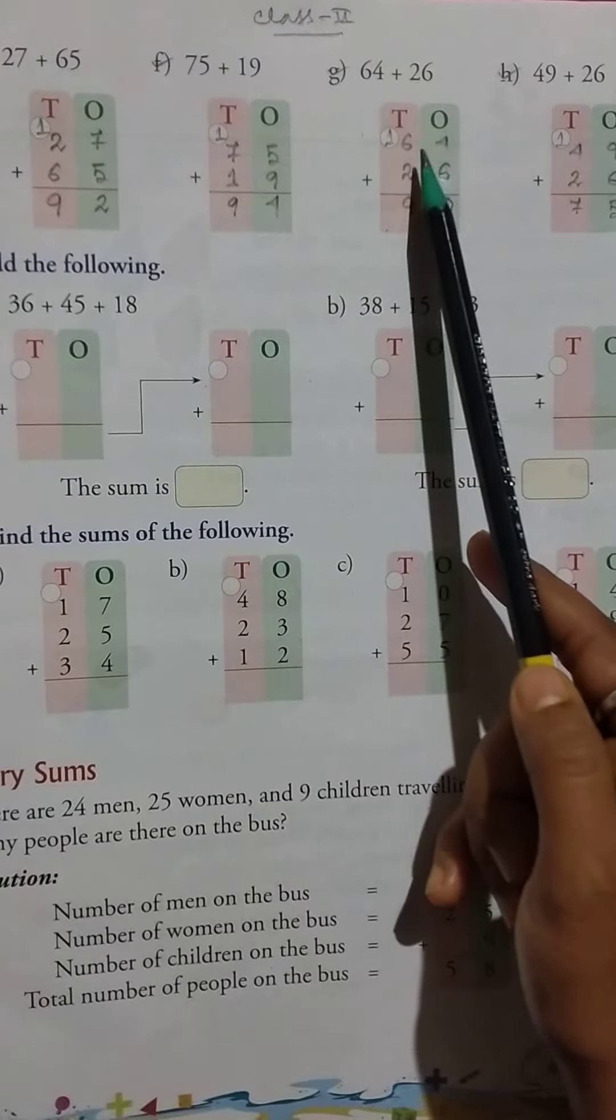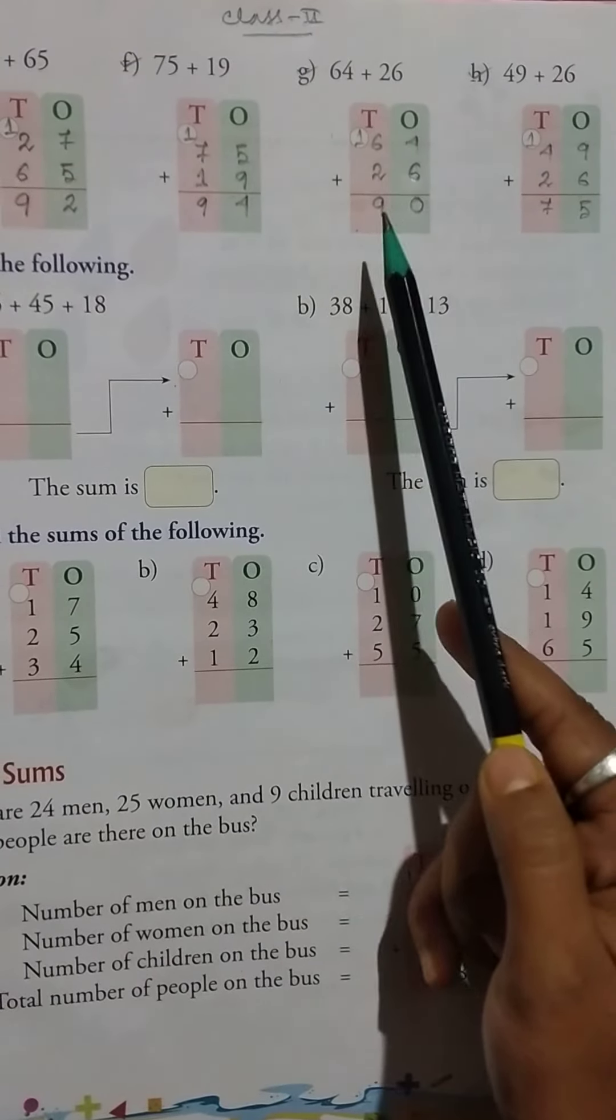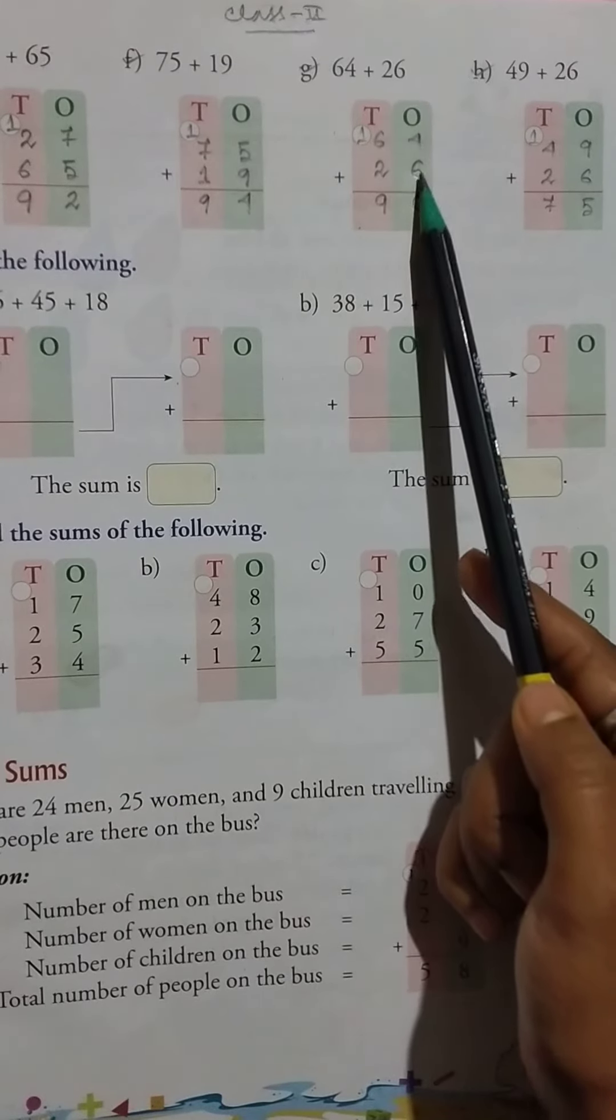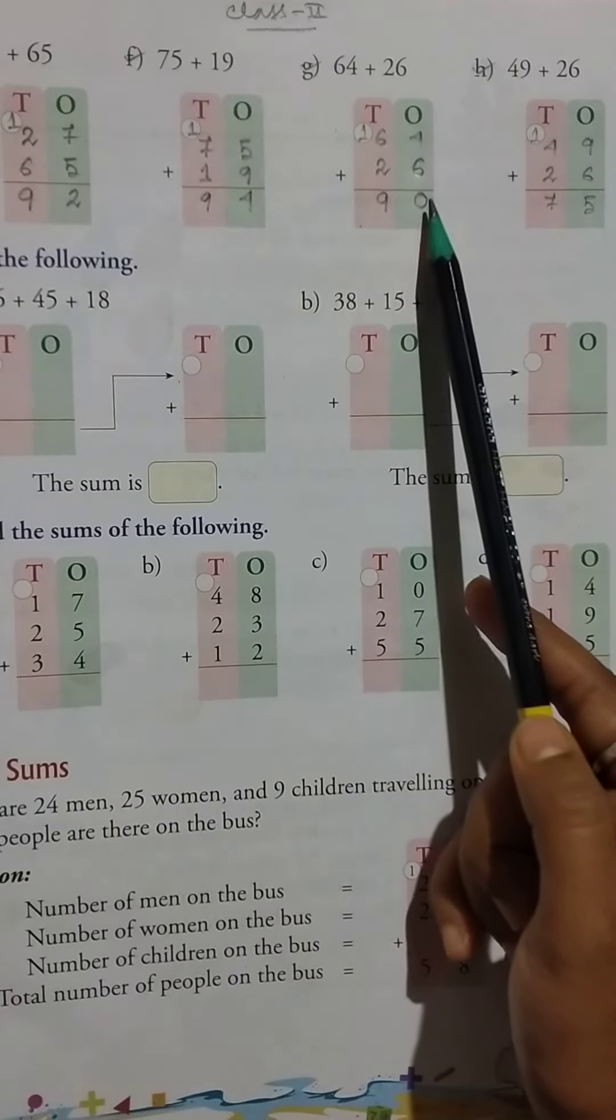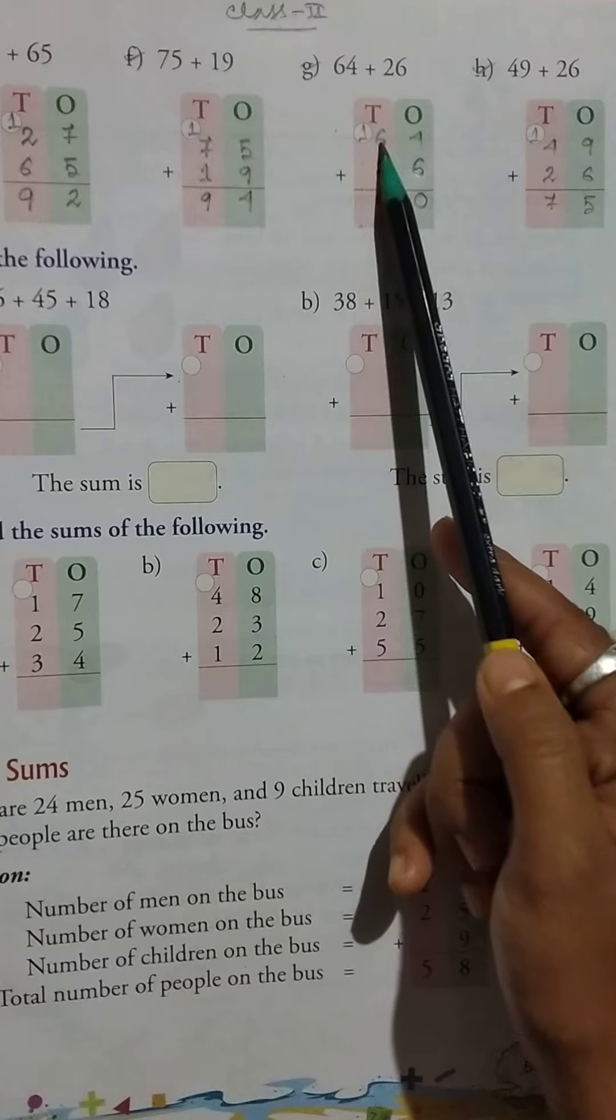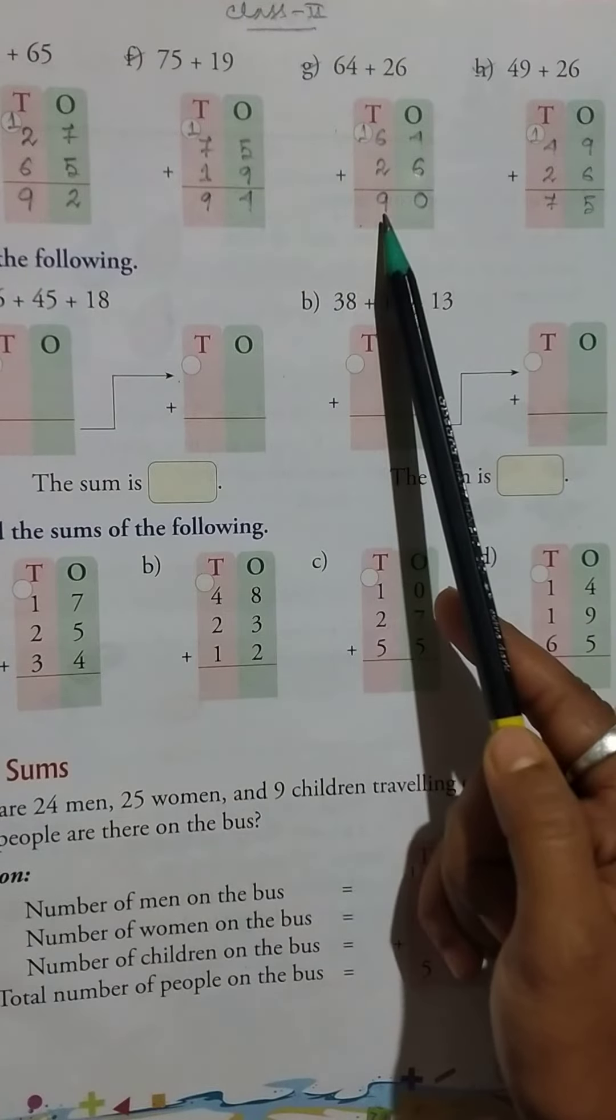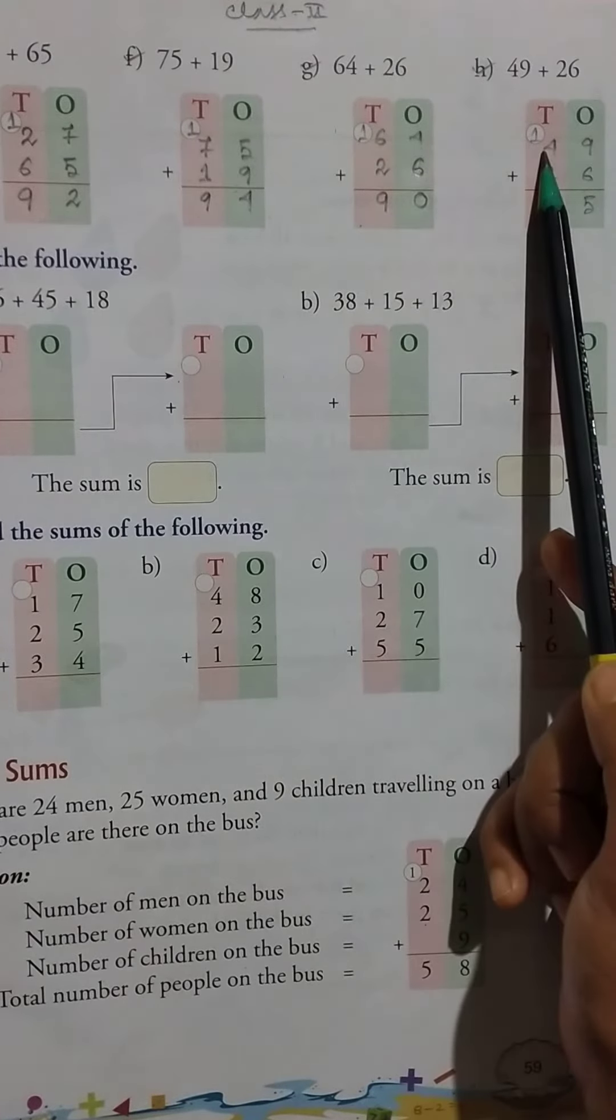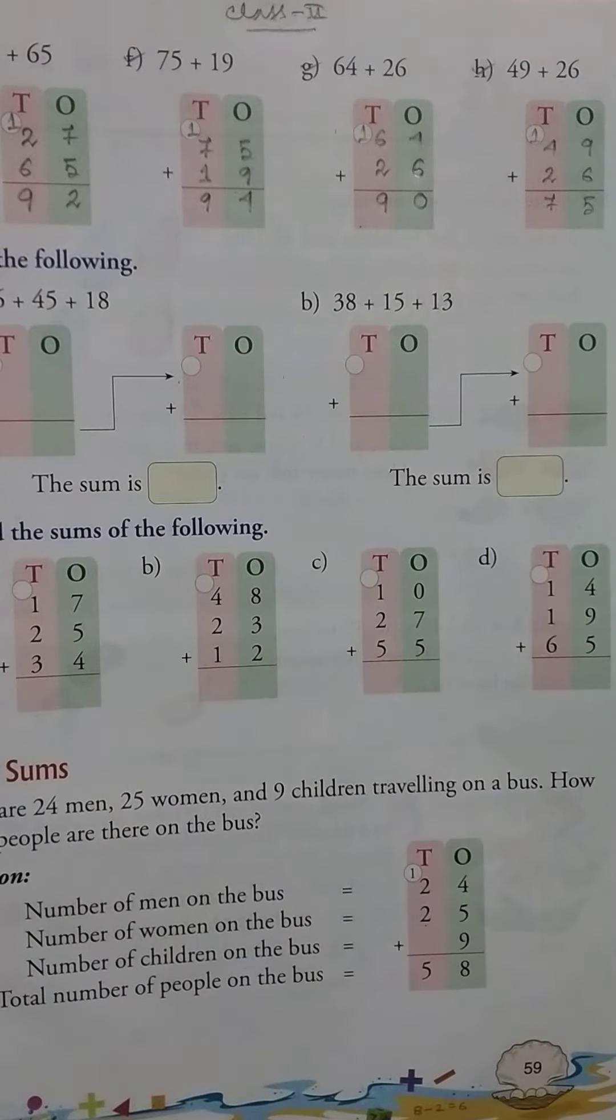Then 64 plus 26 equals 90. 4 plus 6 equals 10, write 0 and carry 1. 1 plus 6 equals 7, 7 plus 2 equals 9. You can complete the remaining problems in the same way. Thank you.